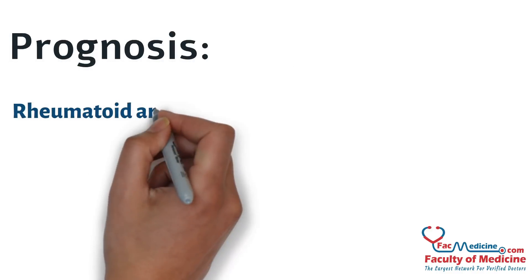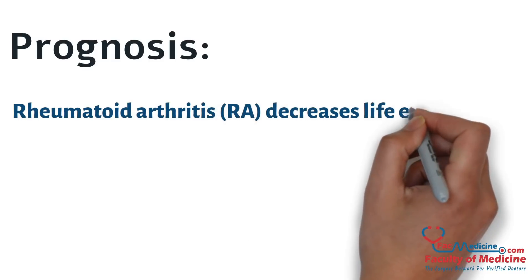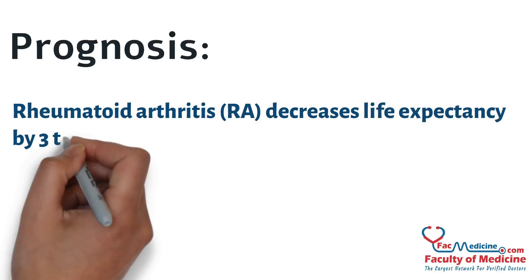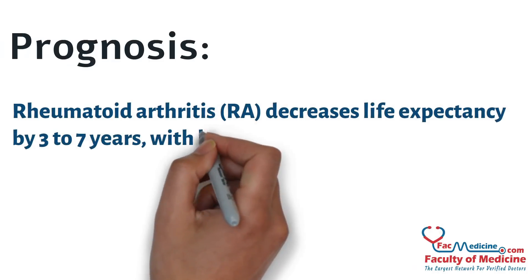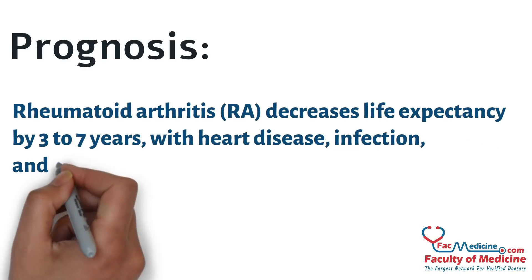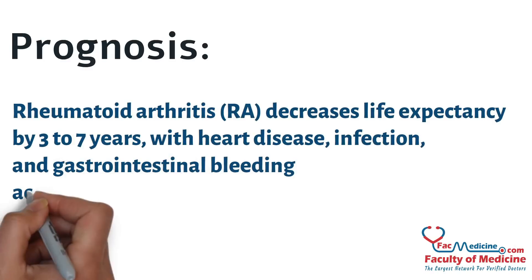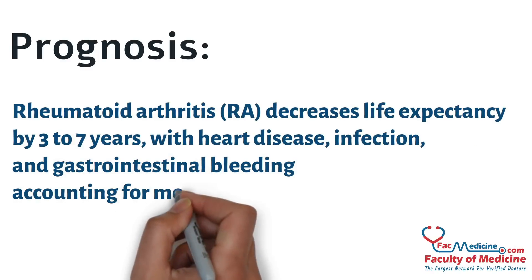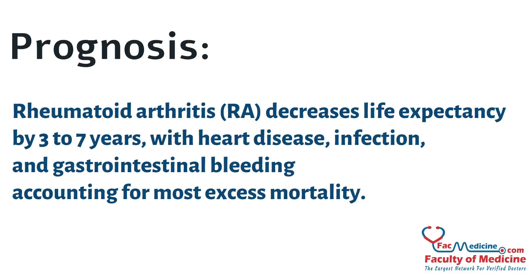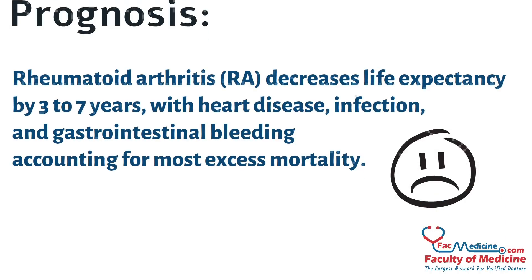Prognosis: Rheumatoid arthritis decreases life expectancy by 3 to 7 years, with heart disease, infection, and gastrointestinal bleeding accounting for most excess mortality.